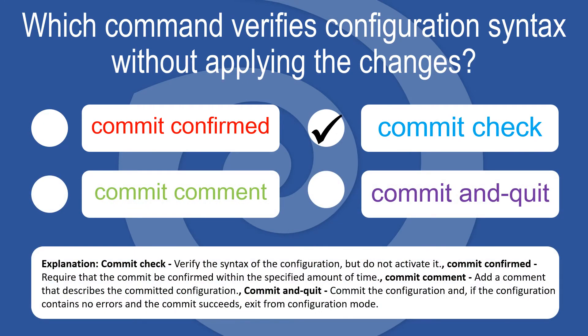The answer is Commit check, which verifies the syntax of the configuration but does not activate it. Commit confirmed requires that the commit be confirmed within a specified amount of time. Commit comment adds a comment describing the committed configuration. Commit and quit commits the configuration and, if no errors exist and the commit succeeds, exits from configuration mode.